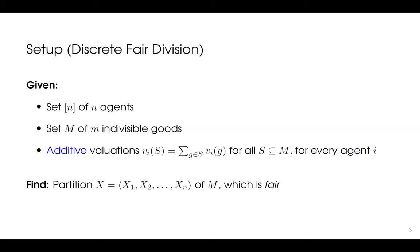The goal is to partition these goods into n bundles, one for each agent — x1 to xn — where xi is the bundle given to agent i. We want a partition which is fair. We are given these goods and these agents. Agents come with additive preferences, and we want to partition the goods among agents in a way that is fair.